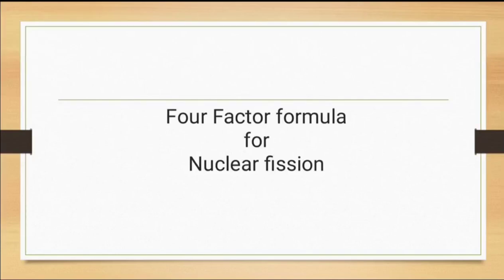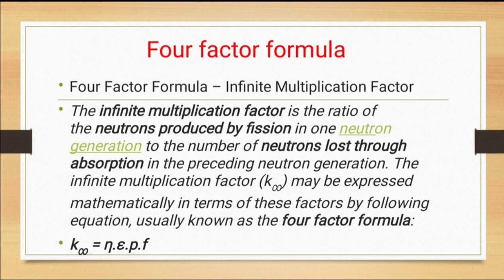Hello students, today we are going to see the four factor formula. That formula is very important and it is also called as a reproduction factor, where k can be calculated using this four factor formula. It is useful for nuclear reactors to find out the loss of neutrons. The four factor formula is again called as the infinite multiplication factor, which is the ratio of neutrons produced by fission in one neutron generation to the number of neutrons lost through absorption in the preceding neutron generation.